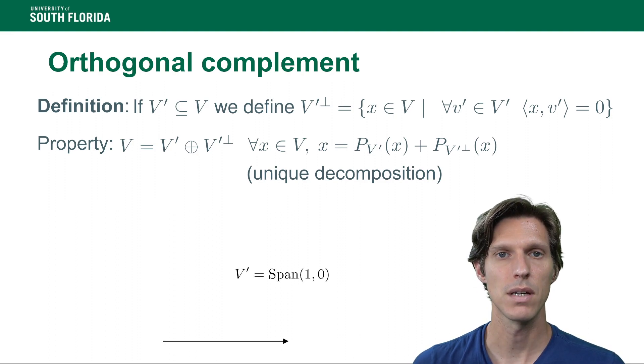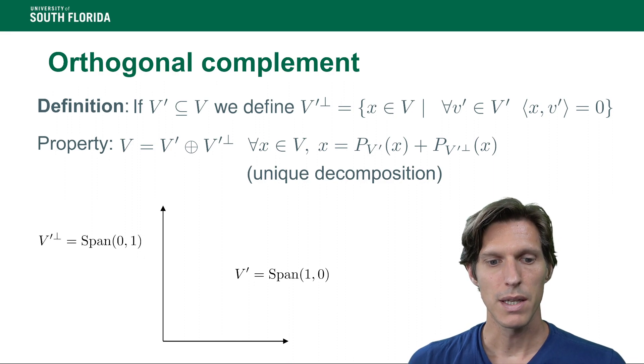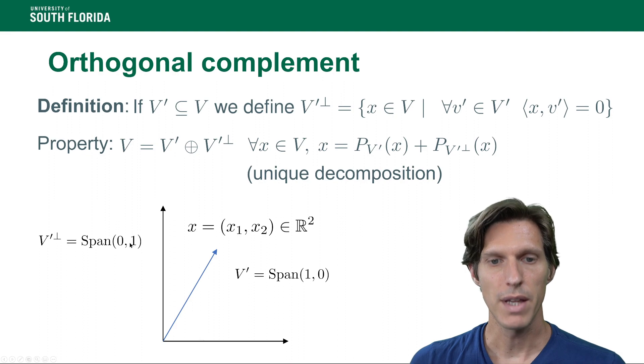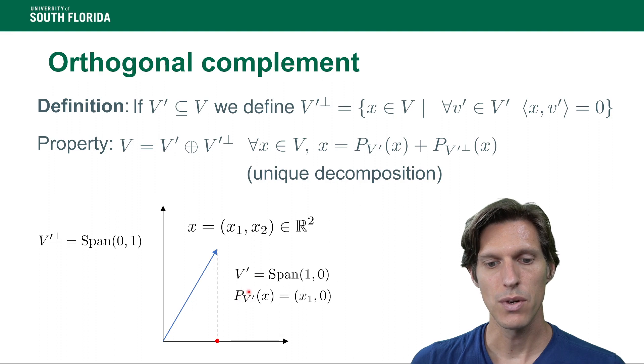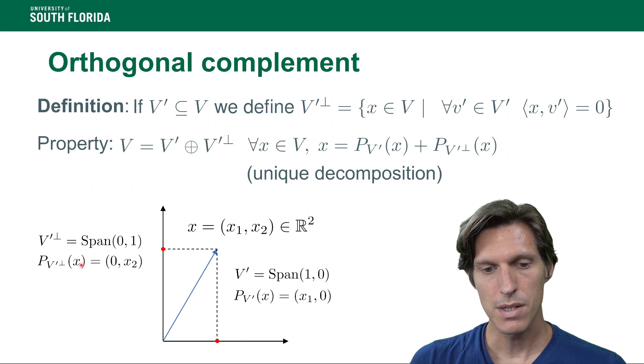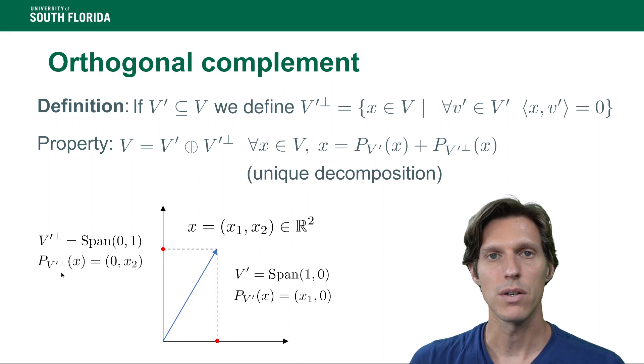So let's work it out again on our previous example. V' is the span of (1,0) and then the orthogonal complement of V' is the span of (0,1). So whenever we have an x which is (x₁,x₂), the projection onto V' of x is (x₁,0). The projection onto the orthogonal complement of V' is (0,x₂), and we can see x is the sum of its projection onto V' and its projection onto its orthogonal complement.